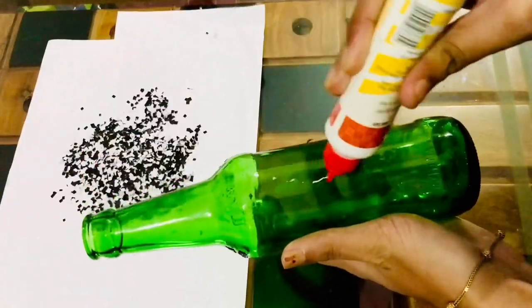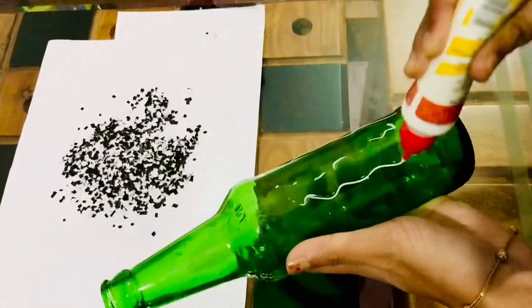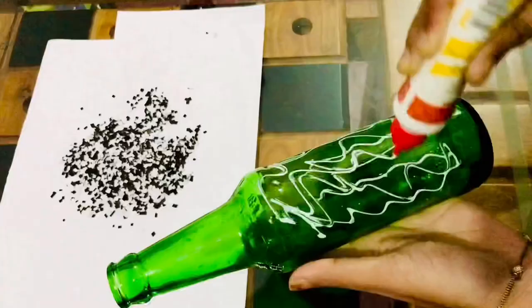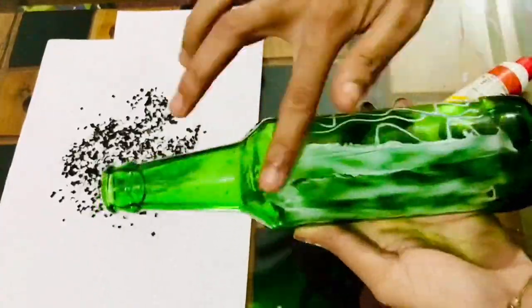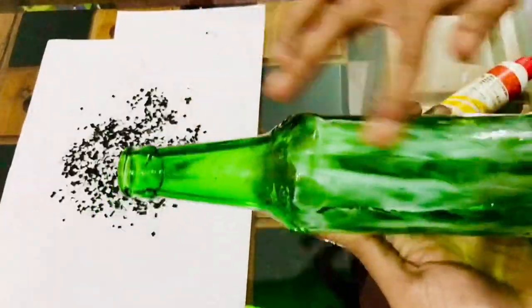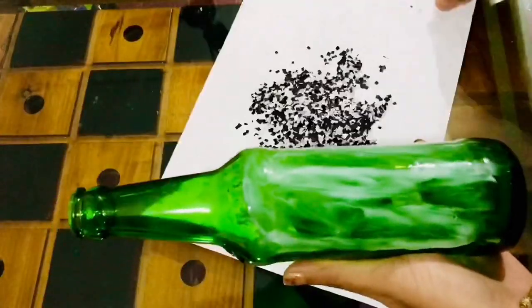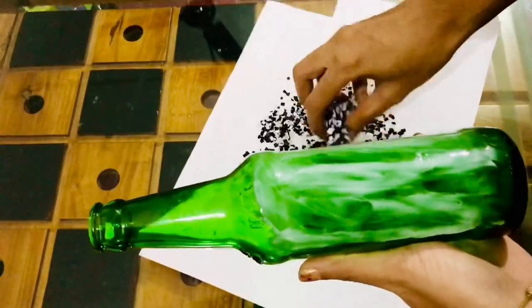Now, we will apply glue on our bottle and then stick the paper pieces onto it.